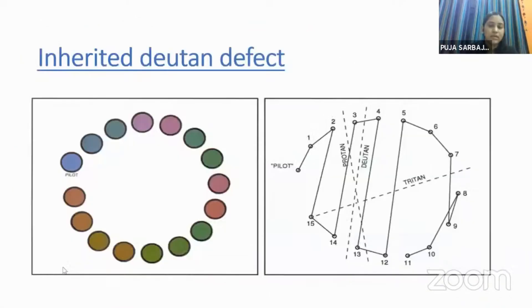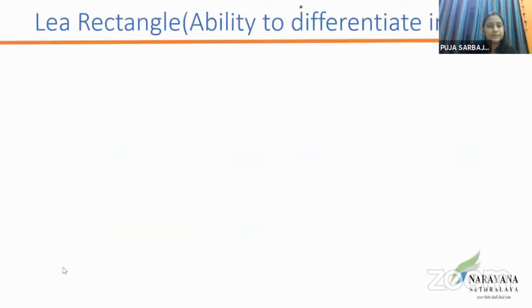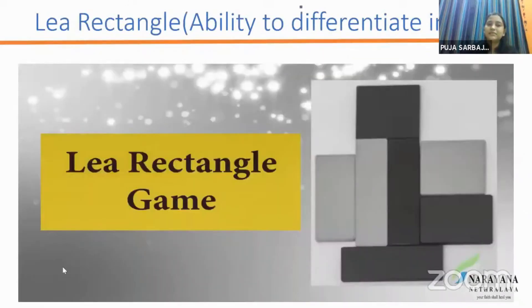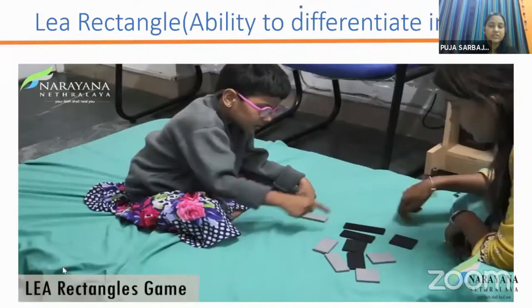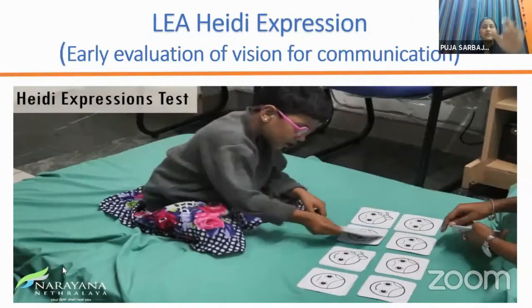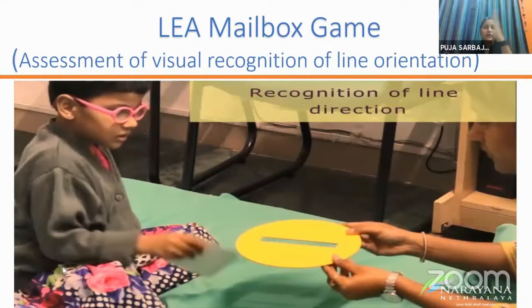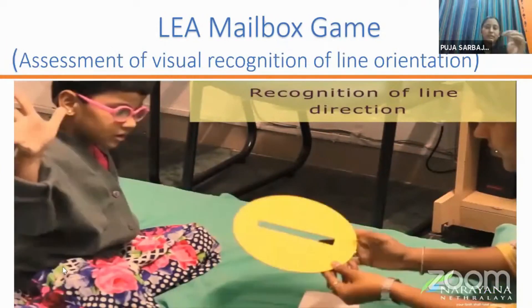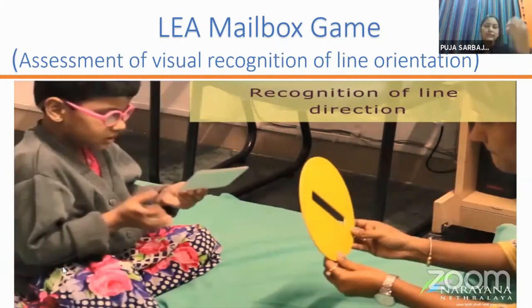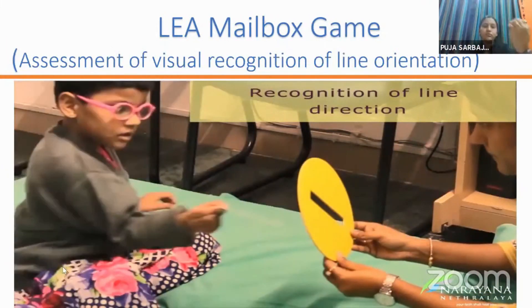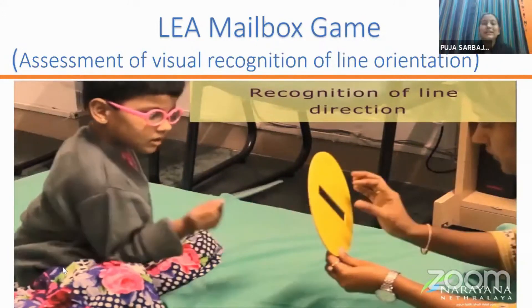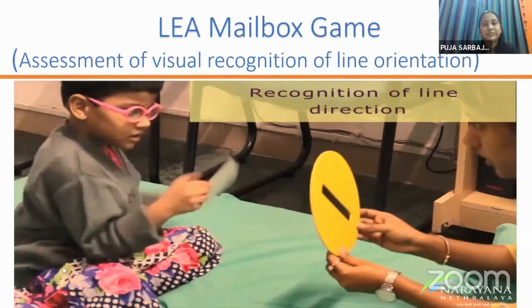The Lea Mailbox assesses visual recognition of line orientation. We hold the mailbox horizontally, vertically, tilted, and oblique, and the child must insert the slot card accordingly. This teaches the child direction conception.